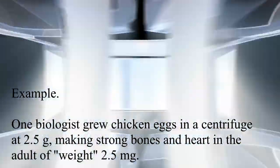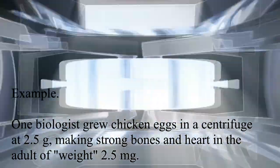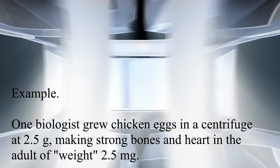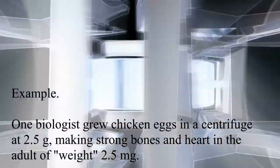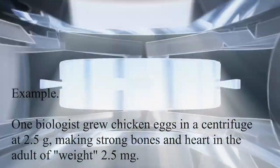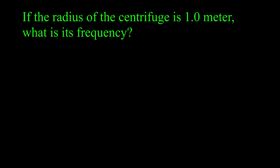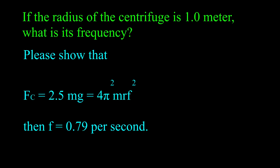One biologist grew chicken eggs in a centrifuge at 2.5 G, making strong bones and heart in the adult of weight 2.5 Mg. If the radius of the centrifuge is 1 meter, what is its frequency? Please show that if the centripetal force equals 2.5 times the weight Mg equals 4π²MRf², then F equals 0.79 per second.